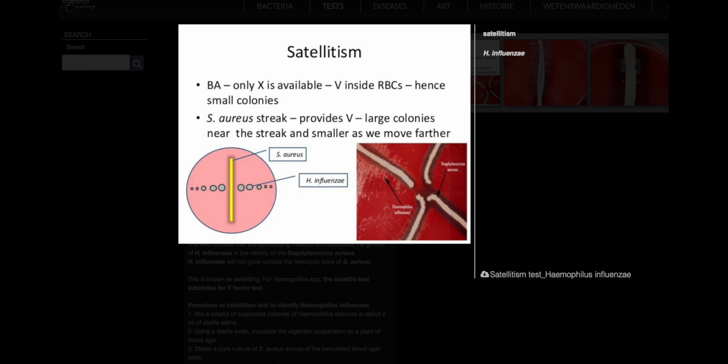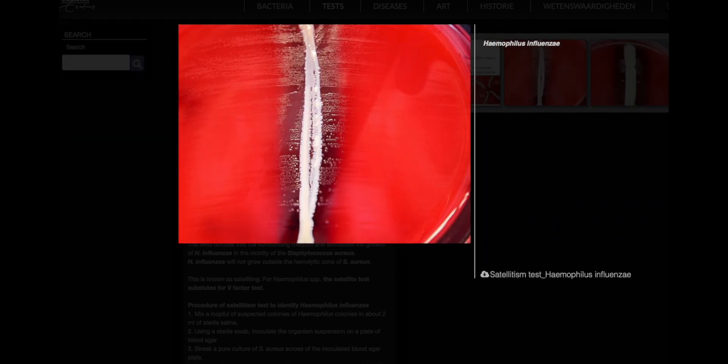Haemophilus influenzae will not grow outside this hemolytic zone due to the lack of these necessary nutrients. This phenomenon is referred to as satelliting and, for Haemophilus species, the satellite test effectively replaces the V-factor test.